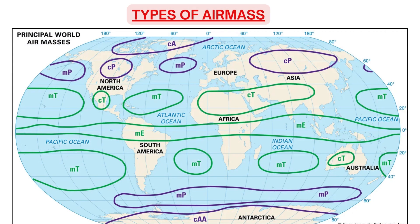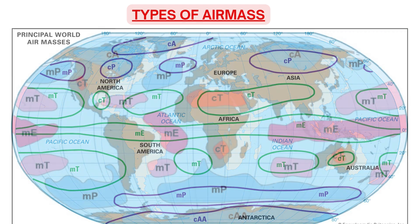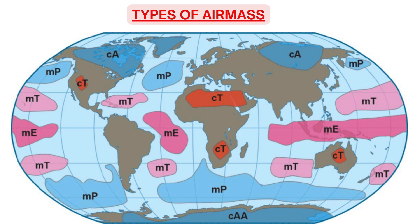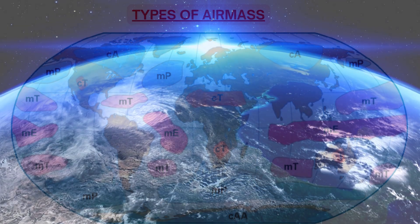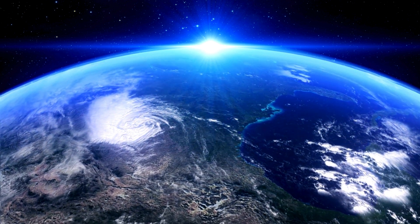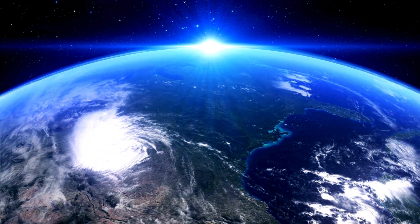To understand fronts clearly, you need to understand what is an air mass. So let's take a quick revision of air mass. Air masses are large volumes of air spread across thousands of kilometers and vertically up to the tropopause, where the temperature and humidity remains more or less constant at a given height. Air masses acquire temperature and humidity properties from the ground or the sea surface below.